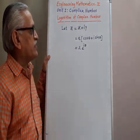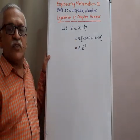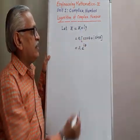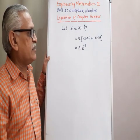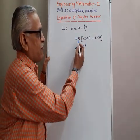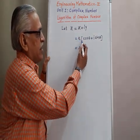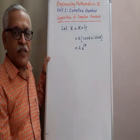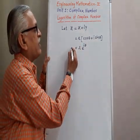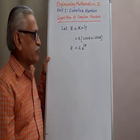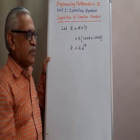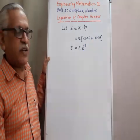Consider a complex number Z equal to X plus iY, the Cartesian form of that complex number. Its conversion to polar form is R into cos theta plus i sine theta. And cos theta plus i sine theta is nothing but E raised to i theta.